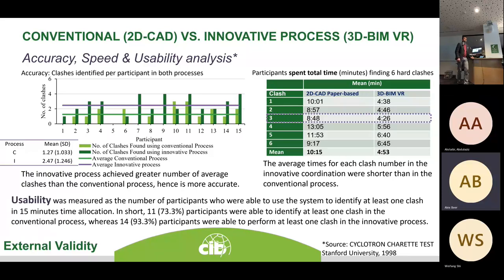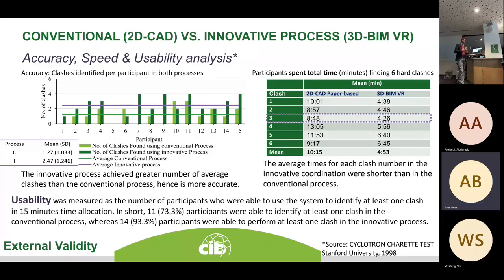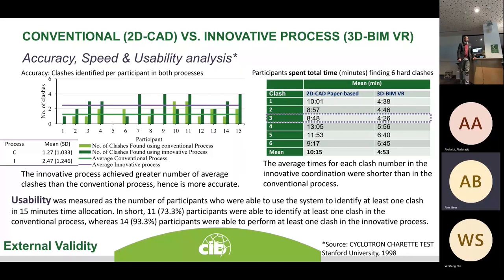For usability, participants were given a 15-minute time limit per clash. If they could find at least one clash within that time, the system was deemed usable by the shared test definition. Eleven participants identified at least one clash in the conventional process, whereas 14 participants found clashes in the innovative VR process. In terms of usability, VR also showed improvement over the conventional method.